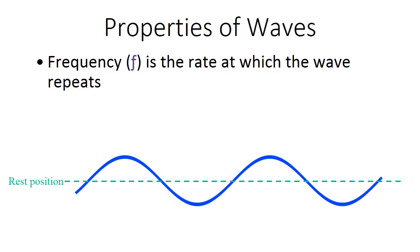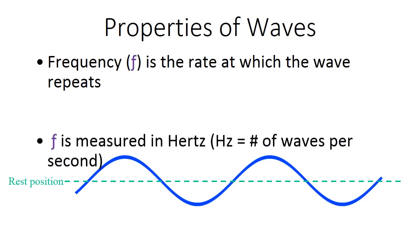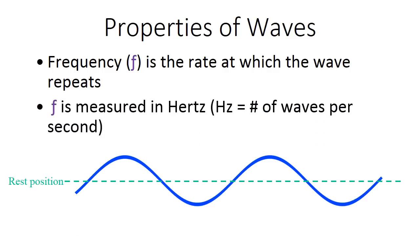Frequency is the rate at which the wave repeats itself. So frequency is measured in Hertz and Hertz is the number of waves per second. So if we say this is one second and we have, what is that, one, two. We've got two crests or two full cycles of the wave there. So that's two Hertz.